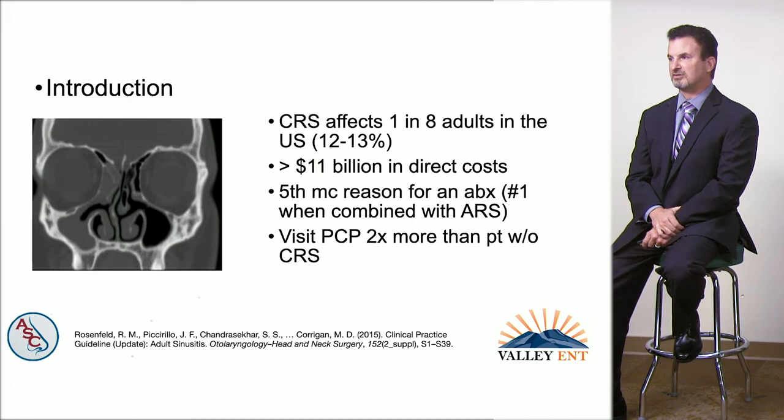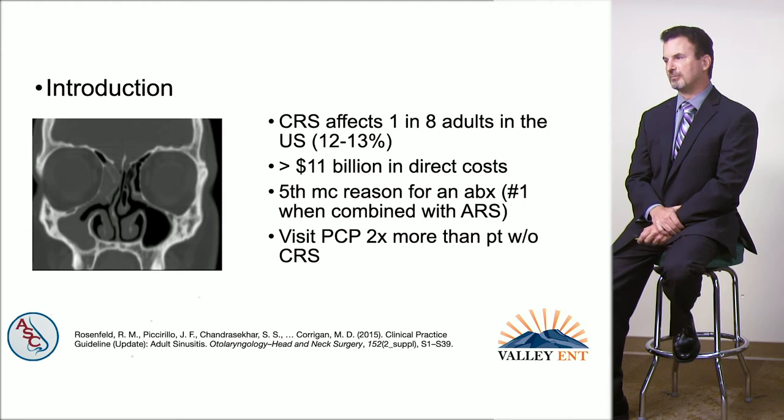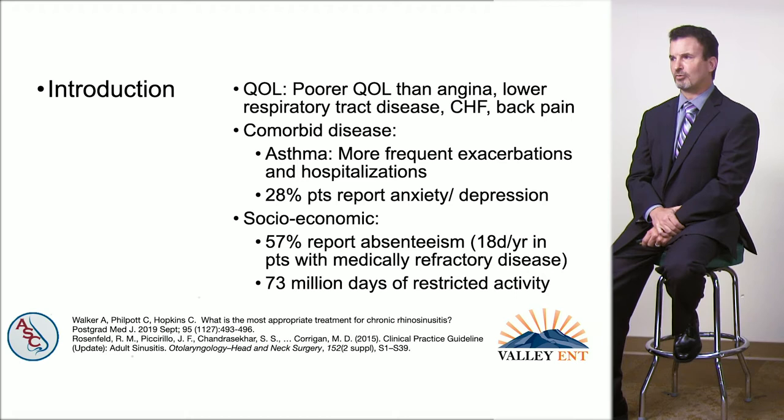CRS affects one in eight adults in the US population. It results in greater than 11 billion dollars per year in direct costs. It's the fifth most common reason for using an antibiotic — number one when combined with acute episodes. Patients with CRS visit their primary care doctor twice as often, and have poorer quality of life than patients with angina, COPD, congestive heart failure, or chronic back pain.